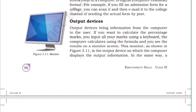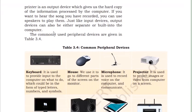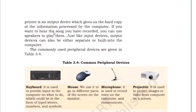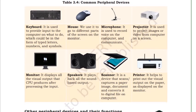The output device is where data is displayed or received from the computer. The monitor is the biggest output device where we can see everything happening. Another output device is a speaker, and another is a printer. Common peripheral devices include keyboard, mouse, microphone, projector, monitor, speaker, scanner, and printer.